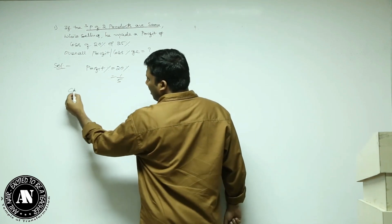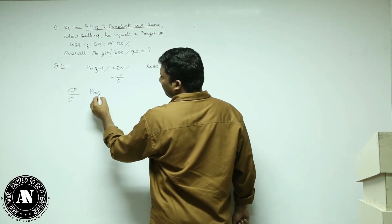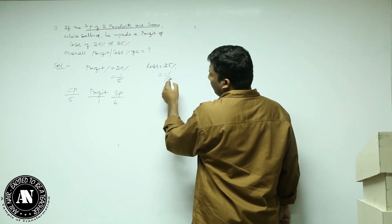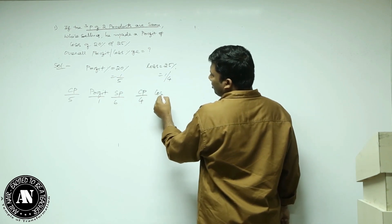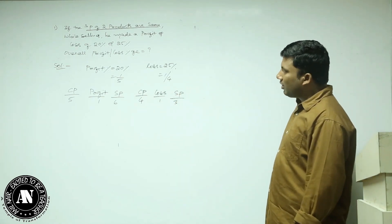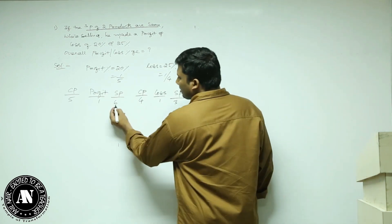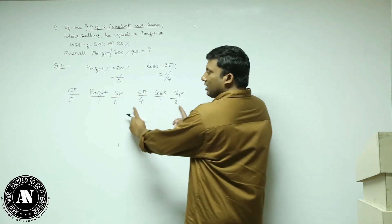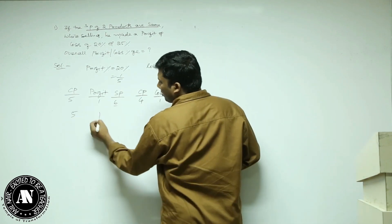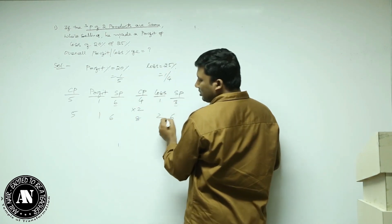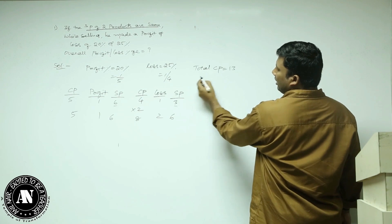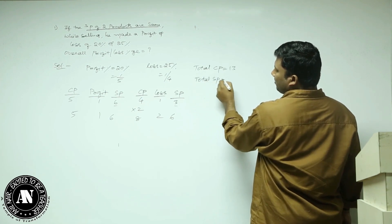20% is 1 by 5. If cost price is 5, profit is 1, selling price will be 6. Loss is 1 by 4: if cost price is 4, loss is 1, selling price will be 3. But the question says selling price of two products are the same — 6 and 3 are different. Take LCM of 3 and 6, which is 6. Multiply first by 1: cost price 5, profit 1, selling price 6. Multiply second by 2: cost price 8, loss 2, selling price 6. Total cost price is 5 plus 8 = 13. Total selling price is 6 plus 6 = 12.